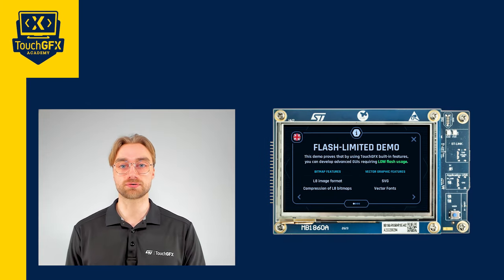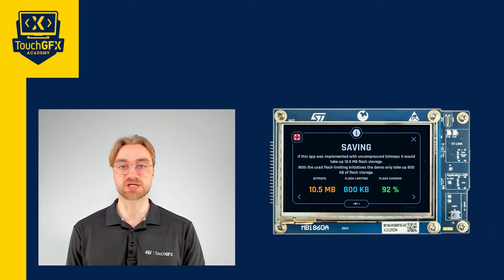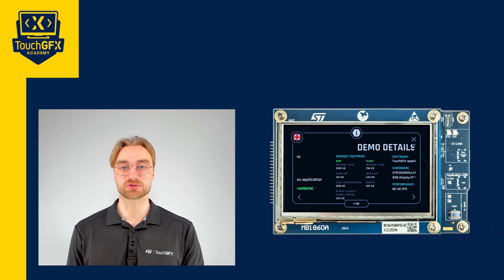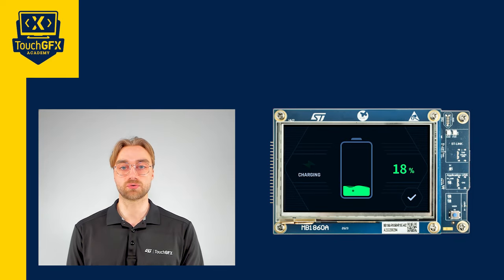By implementing the four concepts demonstrated, it is possible to save a substantial amount of flash — as shown in the demo, we were able to save about 95% of flash. Here you can see a summary table of those concepts: first, L8 formatting, which can be used for images having up to 256 colors; compressed images, which is great as long as you don't want to scale or rotate the widget; SVG, which is easy to use but requires a lot of computing power; and finally, Vector Fonts, which is great when using various font sizes or big font sizes. Now you are ready to save flash in your own project. Thank you for your attention and see you in the next video.